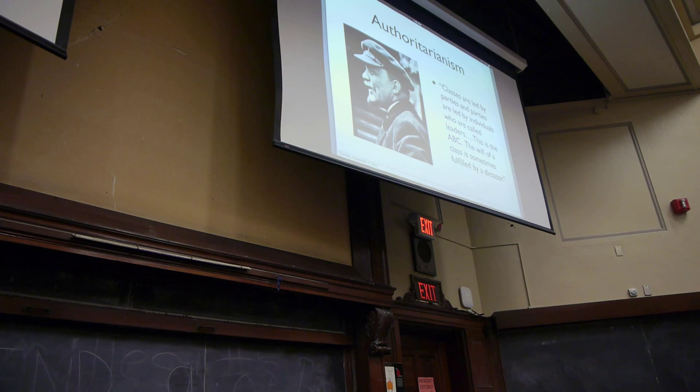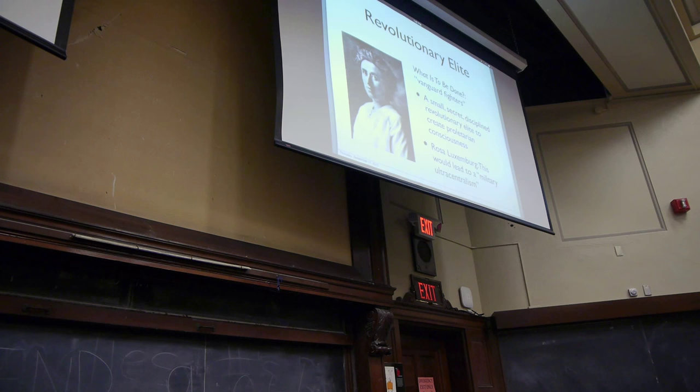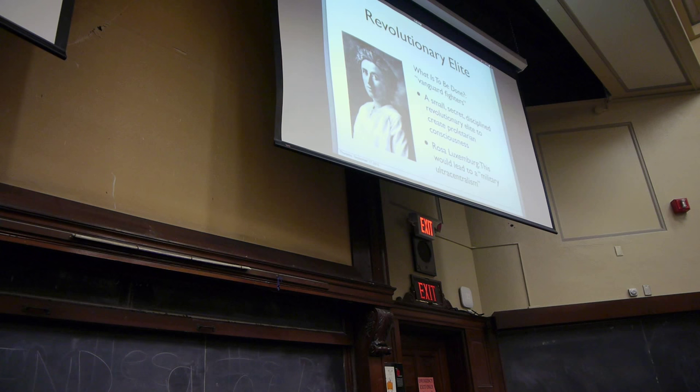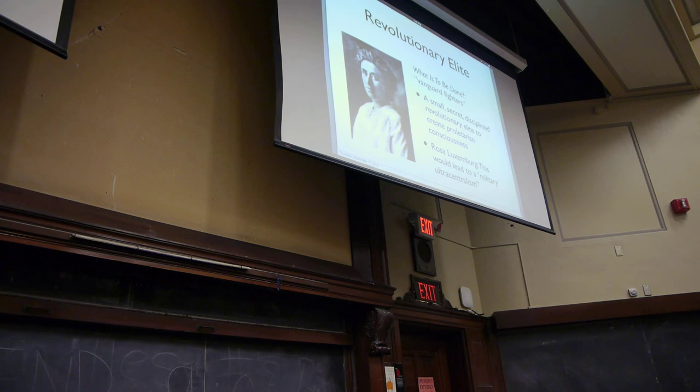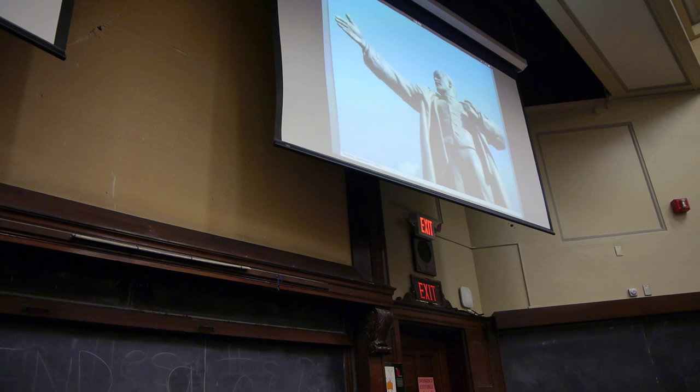Now, almost immediately, other Marxists said, wait, there's a problem with interpreting it this way. Here is Rosa Luxemburg, a German Marxist, who said, this is going to lead to a military ultra-centralism. Well, it certainly did. It led to a military dictatorship. But Lenin thought that was essential. So what Rosa Luxemburg and other Marxists said was a problem to be avoided, Lenin said, no, no, no, that's not a bug, that's a feature, that's a good thing. We need these vanguard fighters to bring about the revolution. So he thinks, look, it's not going to happen by itself. The history of countries shows that the working class will not rise up on its own. You have to make it happen with an organization of revolutionaries. And that's got to be people who are professional revolutionaries.